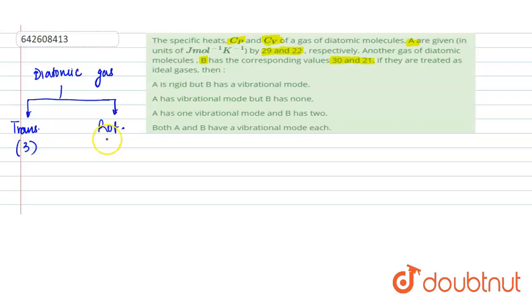Translational degrees of freedom are 3 and rotational degrees of freedom are 2. So, total 5 degrees of freedom are there. In addition, it may have vibrational degree of freedom as well. Now, let's check for the gas A and B.